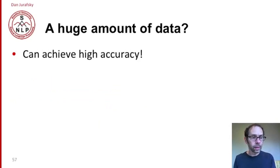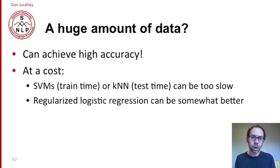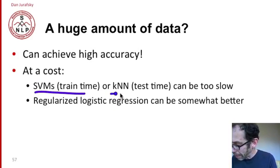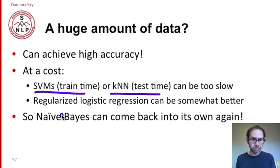If you have a huge amount of data, you can achieve high accuracy, although there is a cost. Many classifiers just take a long time. SVMs especially, and K-nearest neighbors, can be very slow to train. Logistic regression can be somewhat better. But really, if you have a huge amount of data, it may just be efficient to train Naive Bayes, which is quite fast.